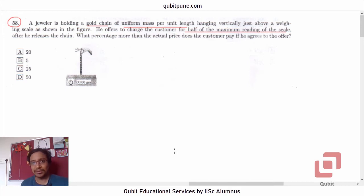To solve this problem, let us introduce some quantities. Let's say m is the mass of the chain and l is the total length. So the distance between his fingers and the surface of the weighing machine will be l.